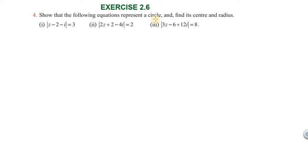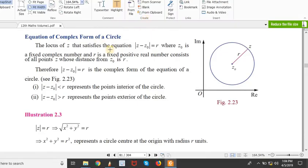To represent a circle, the equation must satisfy |z - z₀| = r, where z₀ is a fixed complex number and r is a fixed positive real number. This is the distance formula, and |z - z₀| = r is the complex form of the equation of a circle.